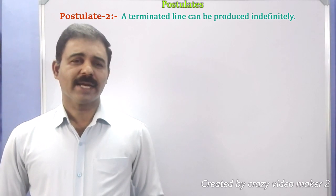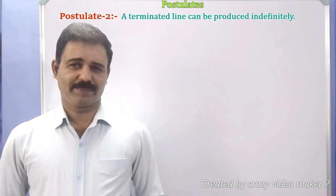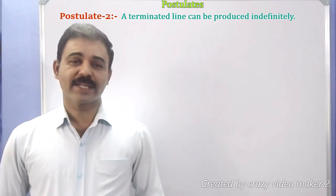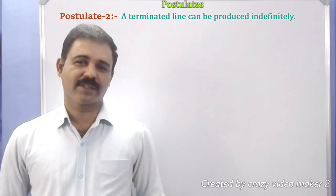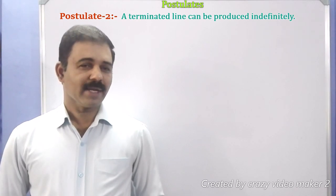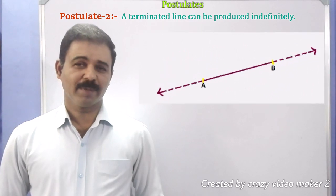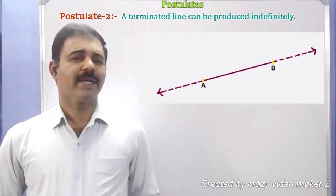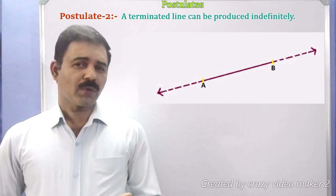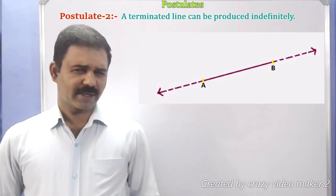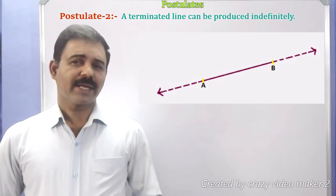Now, Postulate 2 states that a terminated line can be produced indefinitely. A terminated line is one that has two ends — two endpoints, one on either side. In the figure, A and B are the two points and AB is the terminated line. At point A we produce it to the left side, at point B we produce it to the right side, and the AB line segment can be extended indefinitely on both the left and right sides.